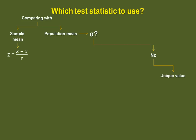If the answer is no, and you are comparing a unique value to the population mean, then you must use this method to calculate your T score.